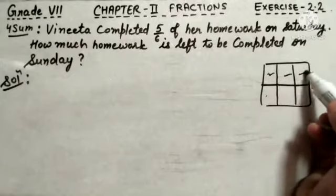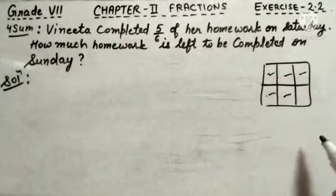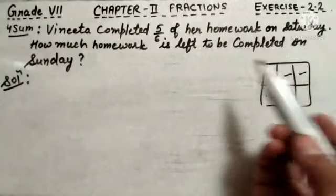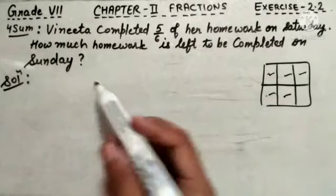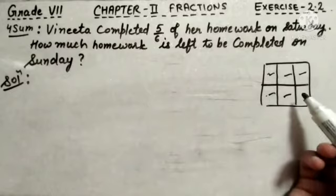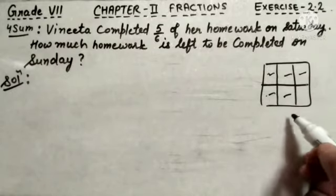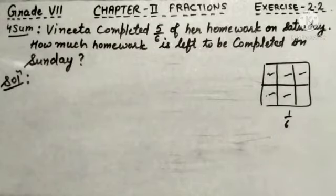So, 1, 2 and 3, 4, 5 - 5 parts she has already done on Saturday. Then, how much work out of this 6 part is left to be done on the Sunday? So, directly we can see 1 out of 6 is left. That means 1 by 6 will be the answer of this question.